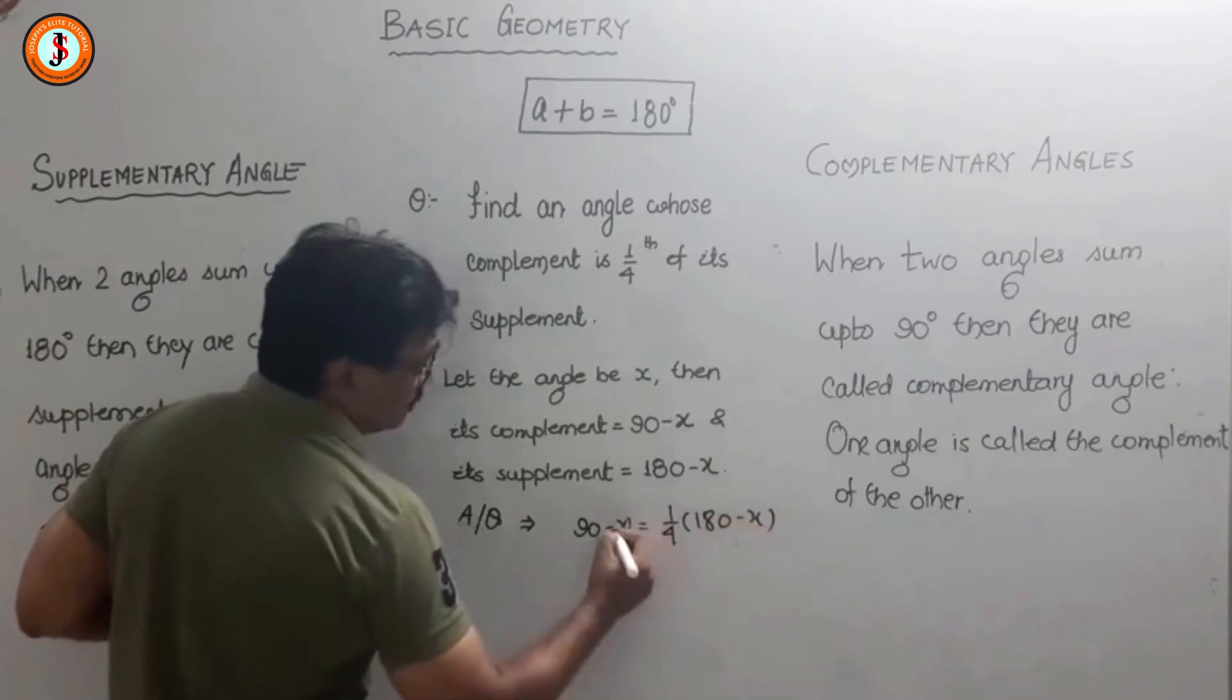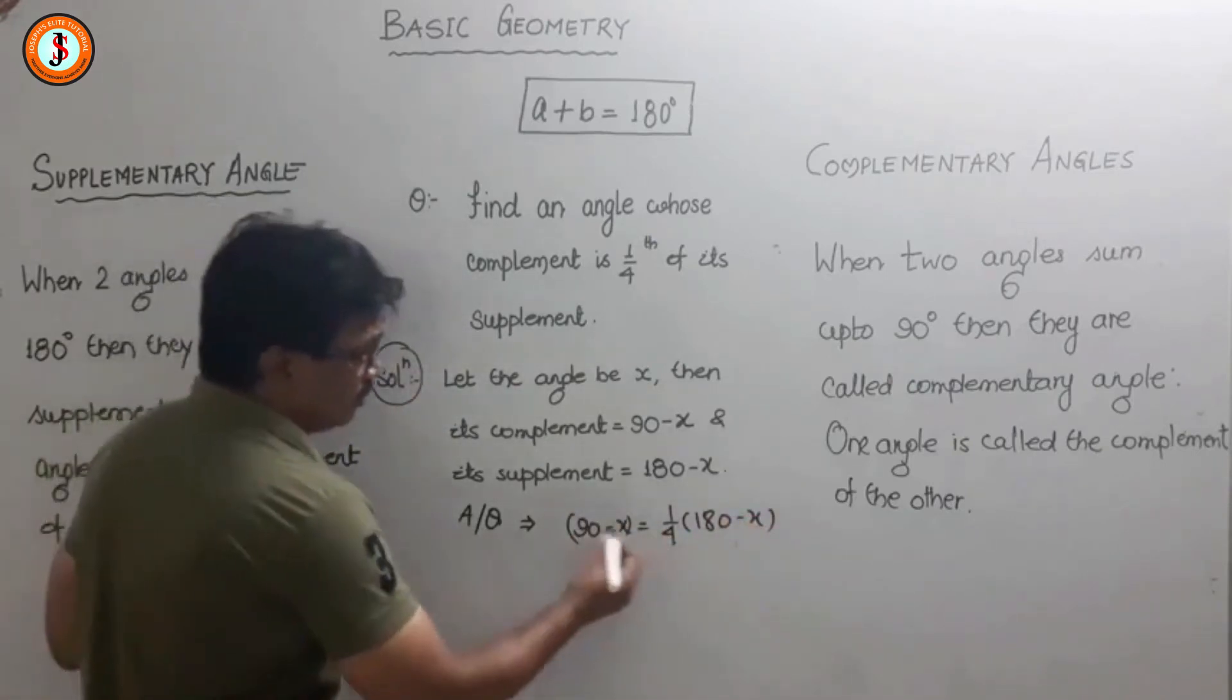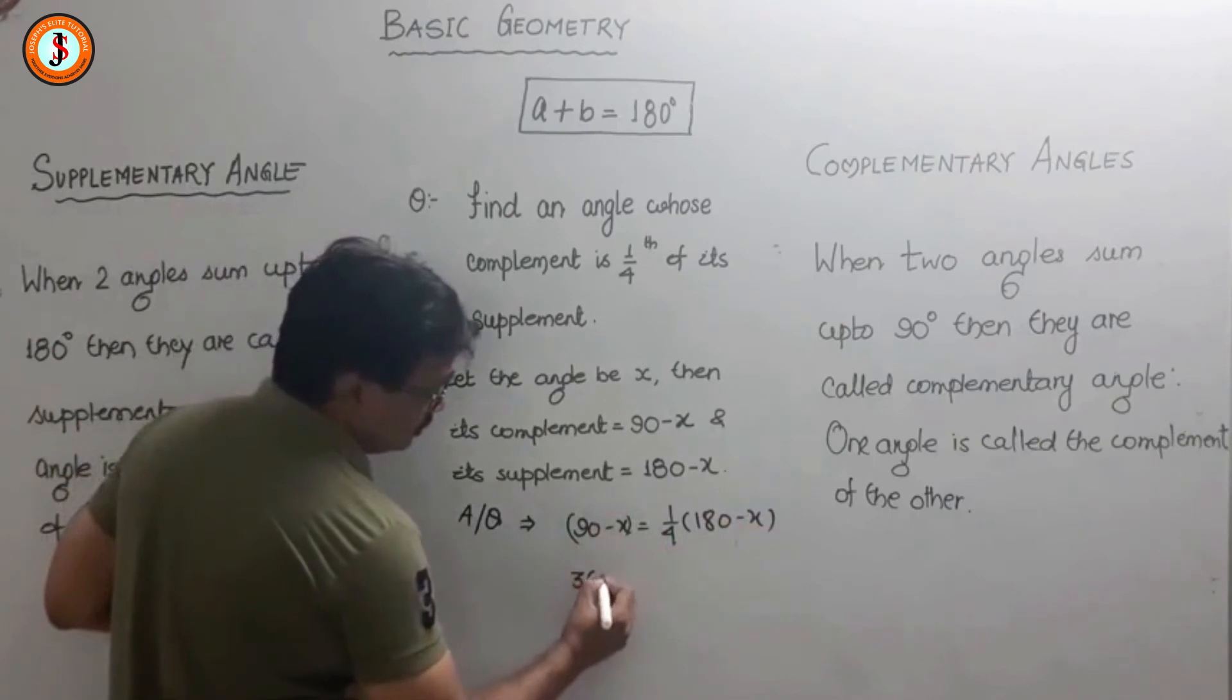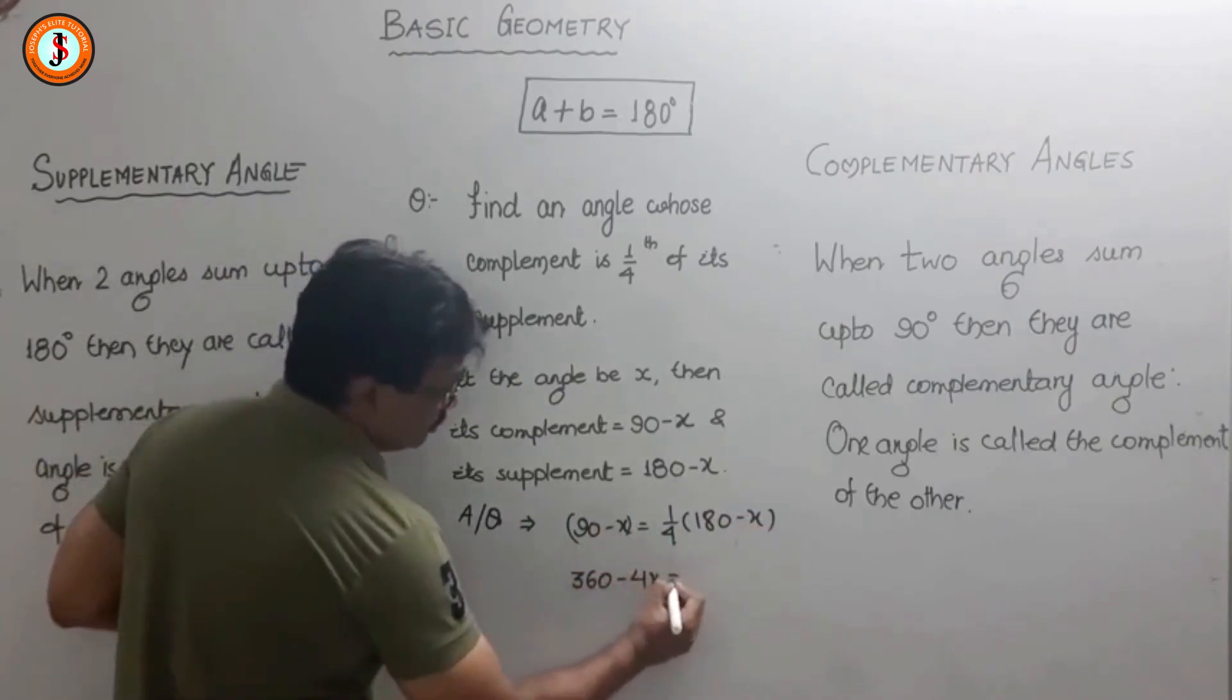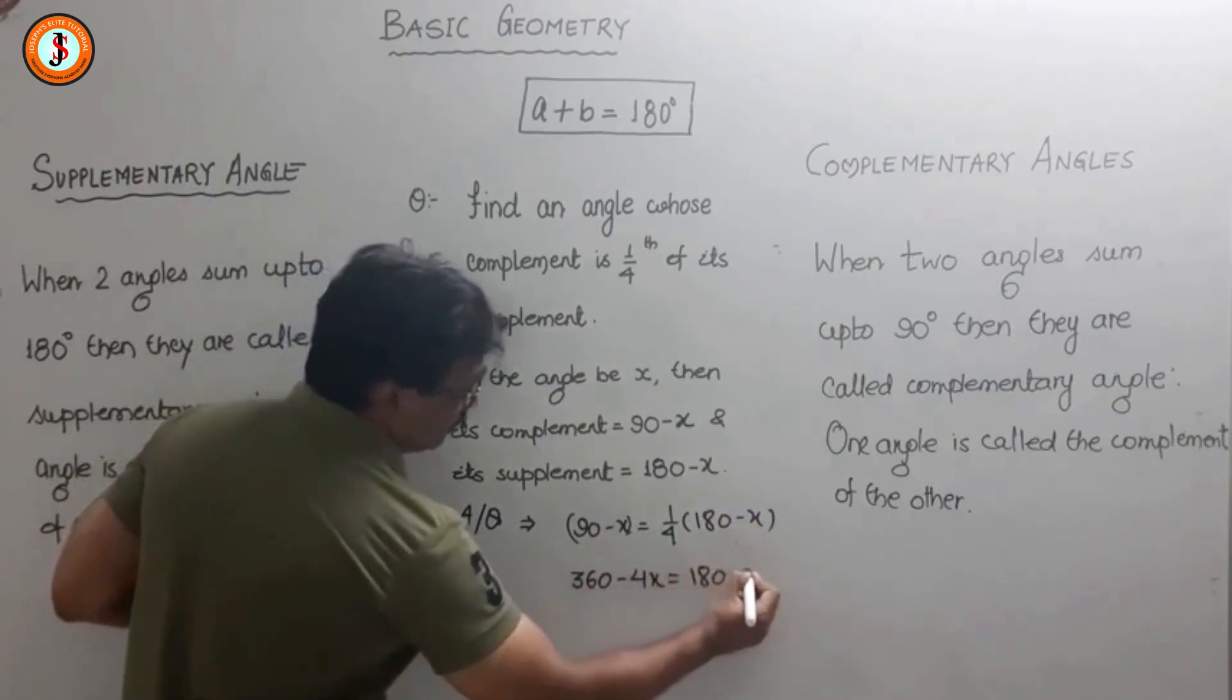Now it is easy. Multiplying both sides by 4: 4 times (90 minus x) equals 180 minus x. So 360 minus 4x equals 180 minus x.